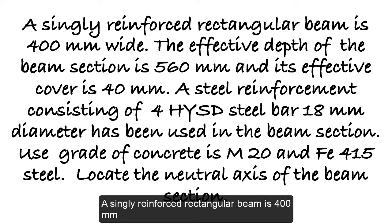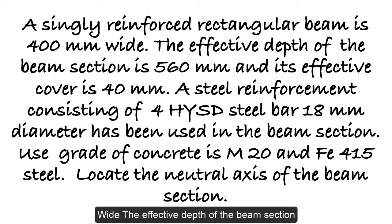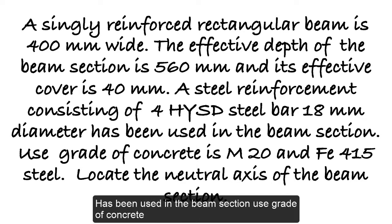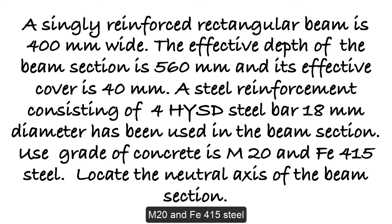A singly reinforced rectangular beam is 400 mm wide. The effective depth of the beam section is 560 mm and its effective cover is 40 mm. A steel reinforcement consisting of 4 HYSD steel bar 18 mm diameter has been used in the beam section. Use the grade of concrete M20 and FE415 steel. Locate the neutral axis of the beam section.